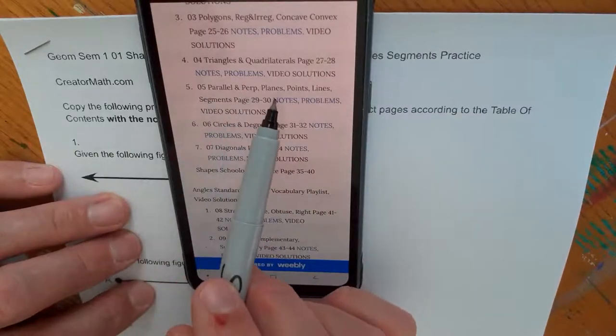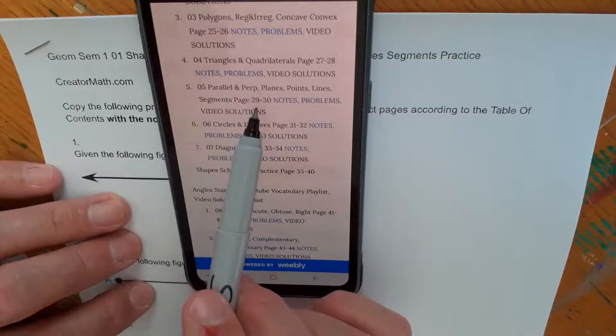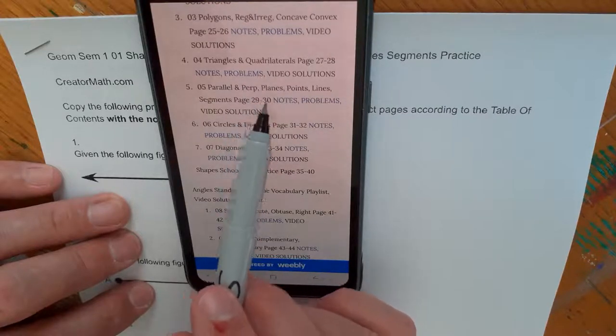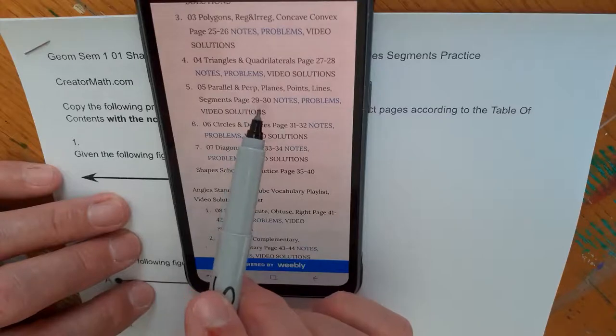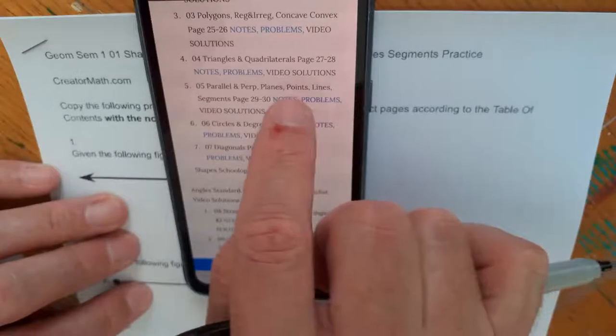Parallel and perpendicular planes, points, lines, segments. It goes on this page of your comp book. Make sure and check the current table of contents to find out these pages. The notes are right here, and the video solution will be right here. The problems we're doing now are right here.